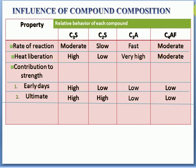Ultimate (later) strength: C3S is high, C2S is high — both contribute to long-term strength. C3A and C4AF have low ultimate strength — they are only for setting time. So: C3S and C2S are only for strength purposes; C3A and C4AF are only for setting time purposes. Draw this table in your notes — this is the complete summary of Bogue compounds and functions of cement.